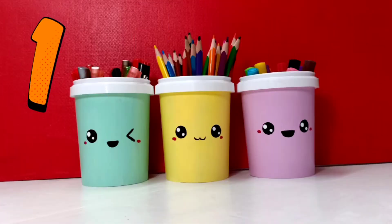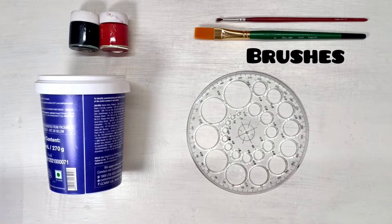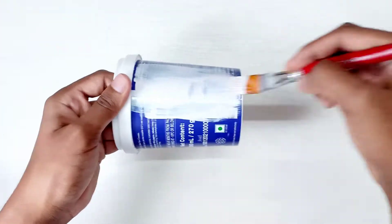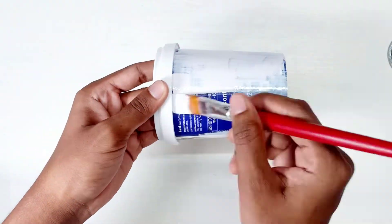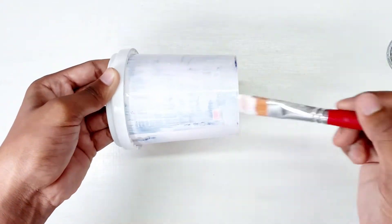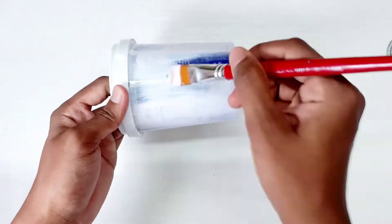To make these cute cup holders, you will need... Start by painting 1 or 2 coats of white acrylic or oil paint over the plastic cup. Here I am using an empty ice cream cup. Let it dry completely before moving on to the next coat, else the paint may start to come off.